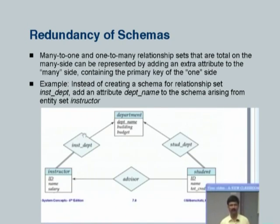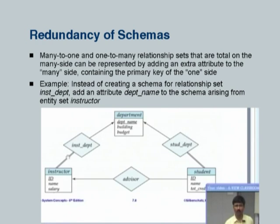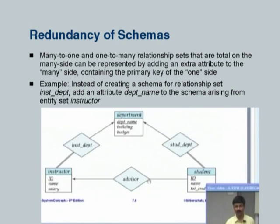In this case, that cannot happen because the relationship ins_dept is total from instructor. Therefore, the department name will actually have to be not null - you can declare it as not null if you create a table, so that would get folded in. Similarly, student_dept gets folded into student, and advisor could have been folded into student also - we did not do it, but we could have.